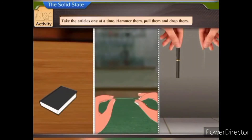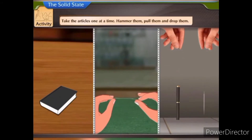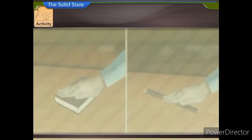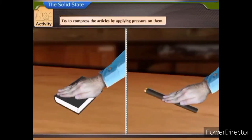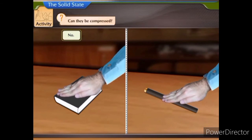Take the articles one at a time. Hammer them, pull them, and drop them. They remain unaffected. Try to compress them by applying pressure. Can they be compressed? No. All these are examples of solids.